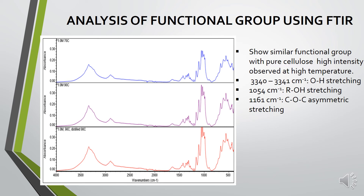For the analysis of functional groups by FTIR, BC treated by all three different methods shows similar functional groups to pure cellulose. You can see the OH stretching band, the C-OH stretching band, and the COC asymmetric stretching. It can be concluded that the bacterial cellulose functional group is the same as that of plant-based cellulose.